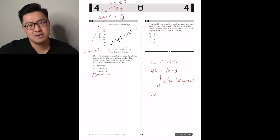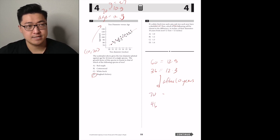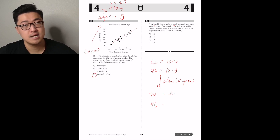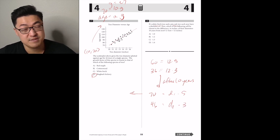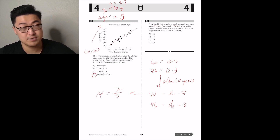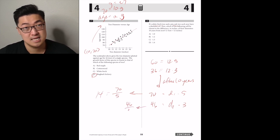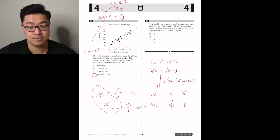Ten years from now their ages are 70 and 46. The growth factors stay the same, so the new diameter times 5 equals 70 and the new diameter times 3 equals 46. That gives 14 and 15.3 — the difference is about 1.3. Answer C.